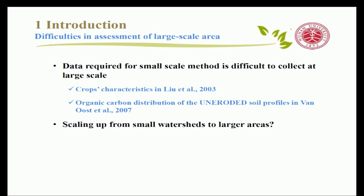Although there are already many studies at the scale of small watersheds, studies trying to assess the CO2 flux at a large scale — such as the scale of China, where soil erosion is very severe and the total erosional area sums up to over one million square kilometers — are very limited. There are two major difficulties in large-scale assessment.